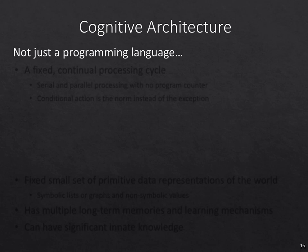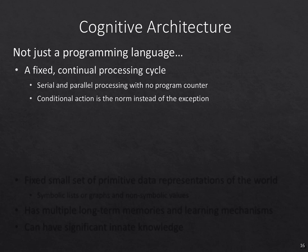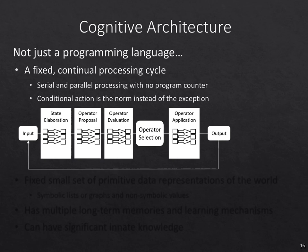How is cognitive architecture different from Java, Python, or some other programming language? First, these systems have a continual processing cycle. In standard programming languages, in order to get them to do something you have to write code and use while or for loops to continue processing over time. In a cognitive architecture, there is an ongoing continual processing cycle. Here is the one in SOAR: inputs come in, then rules fire doing elaboration and proposing of actions called operators, and there's a selection among them. At some point an operator is selected.